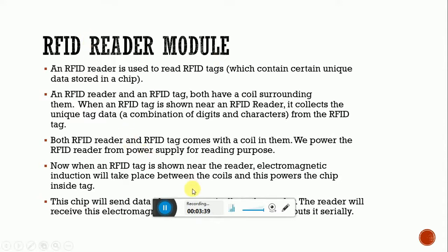RFID stands for Radio Frequency Identification. The RFID reader is used to read RFID tags which contain unique data stored in a chip. Both the RFID reader and RFID tag have a coil surrounding them. When an RFID tag is brought near the RFID reader, it collects the unique ID — a combination of digits and characters — from the tag. When the reader is powered, the coil gets excited, creating electromagnetic induction between the two coils, which powers the chip inside the RFID tag and the tag sends its data to the reader serially.